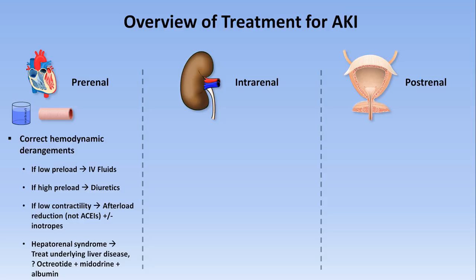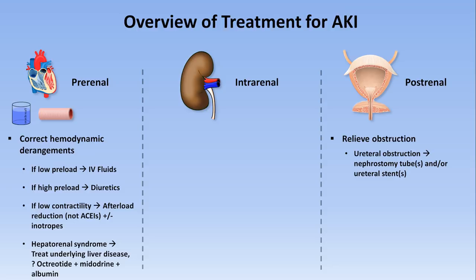For post-renal etiologies, remember that these are all caused by some form of urinary tract obstruction, so the general principle is to relieve the obstruction. How to do this depends on where the obstruction is and what is causing it. If it's a ureteral obstruction — which usually requires bilateral obstruction to lead to AKI — that can be treated with either a percutaneous nephrostomy tube or a fully internal intraureteral stent, a common subtype of which is called a JJ stent. While neurogenic bladders characterized by overactivity can be treated pharmacologically, those characterized by hypoactivity cannot; such patients require intermittent straight caths or a long-term Foley catheter.